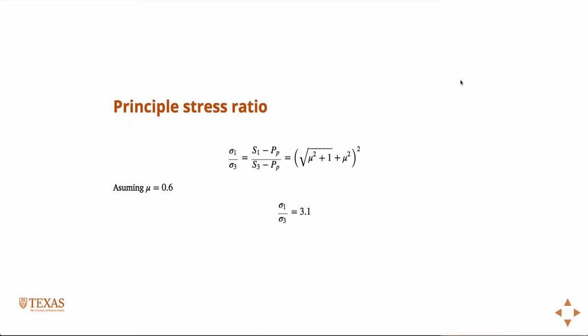Using the Mohr failure criterion, we can ask ourselves: what if we assume everything is slipping at all times? Then we look at what the maximum ratio of principal stresses could be according to the Mohr-Coulomb slip criterion with no cohesion. If you work through the equations for a friction value of 0.6, this works out to a maximum ratio between the stresses of 3.1.